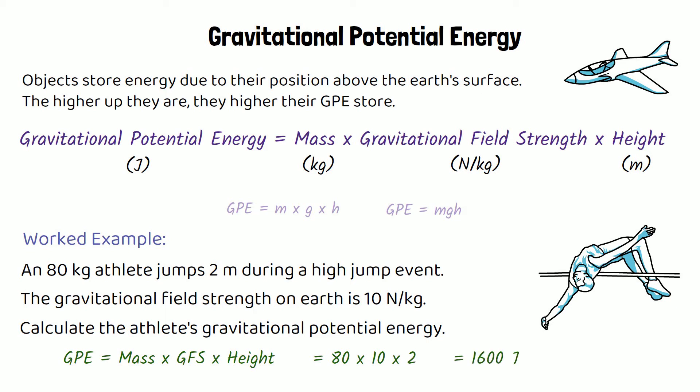So if we times them together, we get 1,600 joules, and that is the athlete's gravitational potential energy.